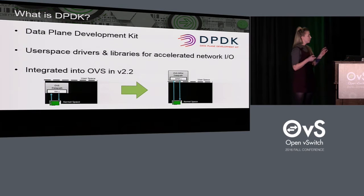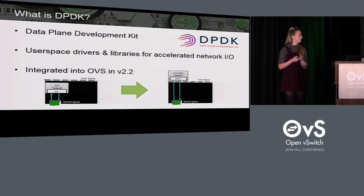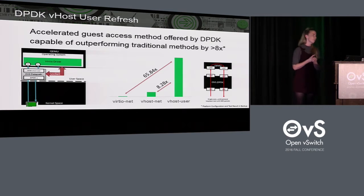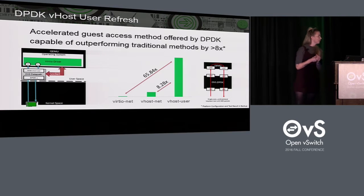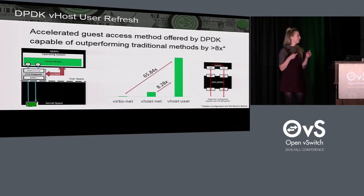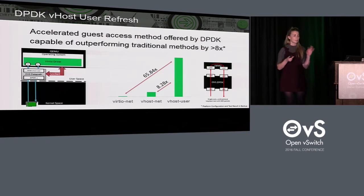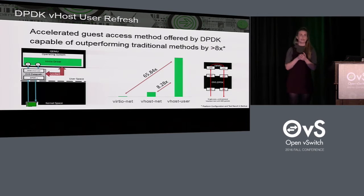At that point in time in version 2.2, OVS was primarily using DPDK for accelerated physical I/O. One of the options offered by DPDK for this is vhost user. Vhost user was integrated into OVS in version 2.4 about a year and a half ago. At a very high level, vhost user works by having QEMU, which is running the virtual machine, offload the servicing of the virtual network interfaces to the DPDK backend running in user space, whereas traditionally this processing would have been done in kernel space by methods like virtual I/O net and vhost.net.